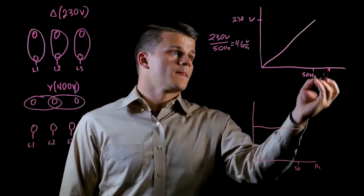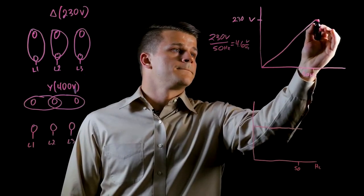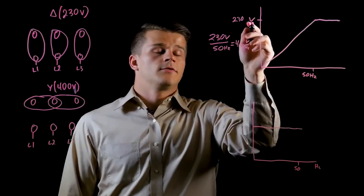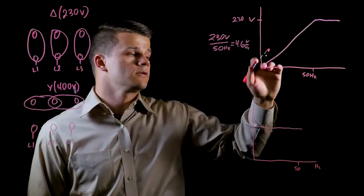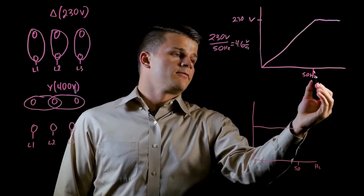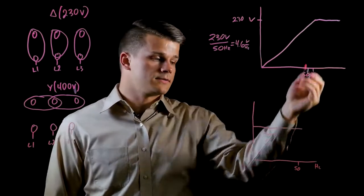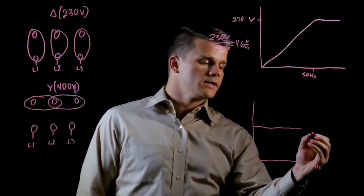If we were to try to increase past here, we don't have any voltage available to increase anymore. As the frequency increases, the voltage stays constant, and this is what's known as the field weakening range.